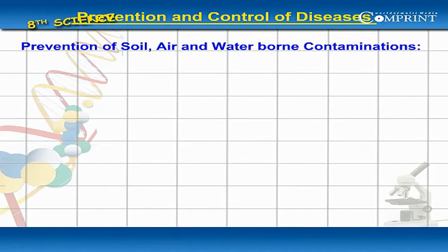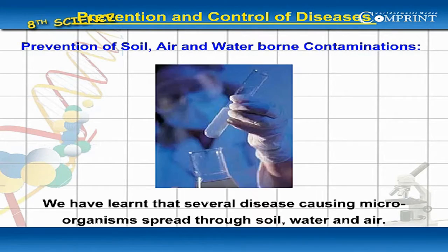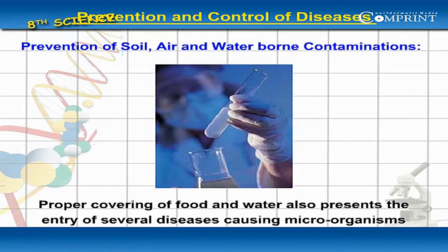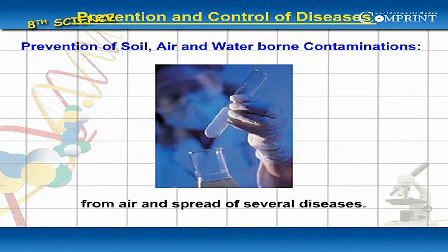Prevention of Soil, Air and Water Contamination: We have learnt that several disease-causing microorganisms spread to soil, water and air. Proper covering of food and water also prevents the entry of several disease-causing germs or microorganisms from air and the spread of several diseases.